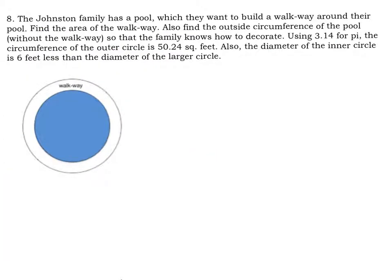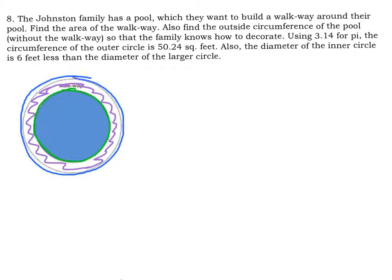Now, we are working with our pool. We want to build a walkway around our pool. We have to find the area of the walkway, which means the area of just the part I'm coloring with the purple. We also want to find the outside circumference of the pool without the walkway, which would be just this portion right there in green. And make sure you use 3.14 for pi. We are given that the circumference of our outer circle is 50.24 feet. Circumference is not square, so it's just feet. And the diameter of the inner circle is 6 feet less than the diameter of the larger circle.